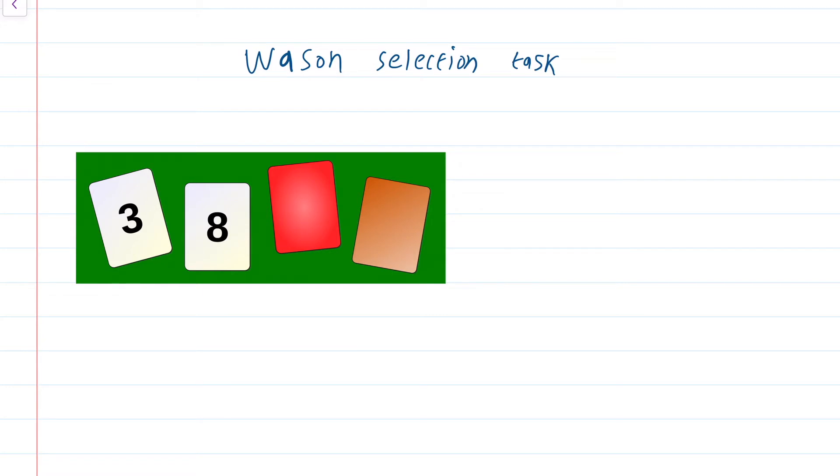You see on the table in front of you, 4 cards. Each card has 2 faces, one face has a number, the other face has a colour. So, you see these 4 cards displayed in front of you on a table. Obviously, you cannot see both faces, the face that is towards the table is not visible to you.